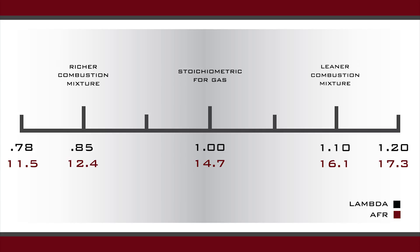When you're tuning for idle and part throttle, you're going to want to see an air-fuel ratio of 14.7. As you can see on the graph, that's a lambda reading of 1.00.